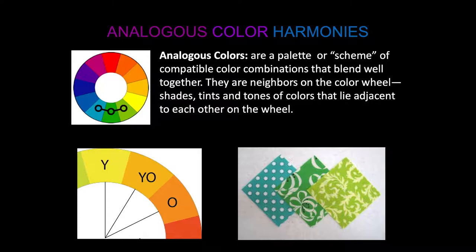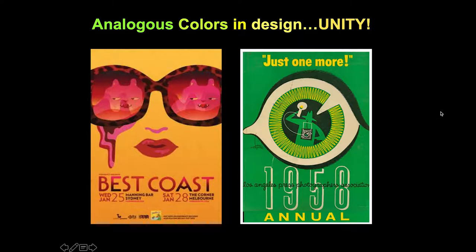Analogous color harmonies are a different triangle in the color wheel — sort of a pie wedge, a section of the color wheel that can go along the outside edge, or all the way to the center where we would find neutral gray. Analogous colors are a palette or scheme of compatible color combinations that blend well together because they are neighbors on the color wheel. You can imagine starting with green, adding a little blue to get a bluish green, or yellow to get a yellowish green, bringing it all the way to orange or yellow — these colors give a feeling of unity to a design.